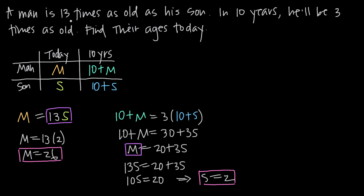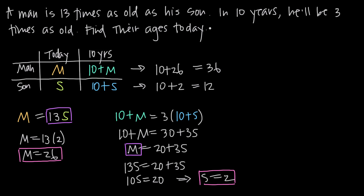This fits the problem — the man today is 13 times as old as his son, and 2 times 13 is 26. Let's also check their ages in 10 years. The man's age in 10 years: 10 + 26 = 36. The son's age in 10 years: 10 + 2 = 12. The problem states the man will be three times the son's age, and 12 times 3 = 36. So 36 = 36, which checks out.